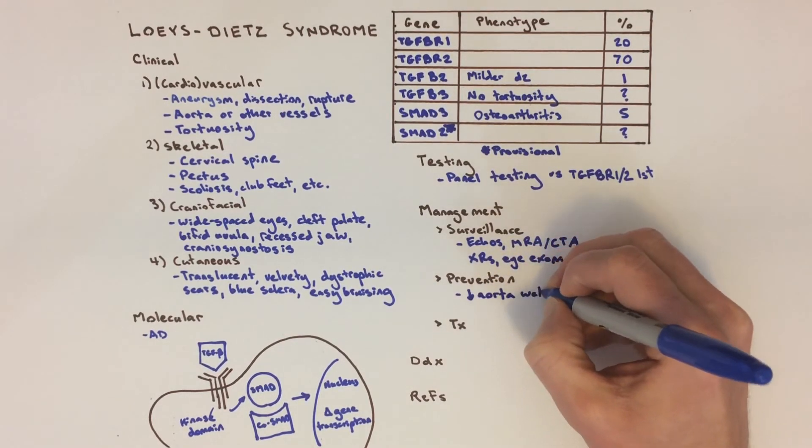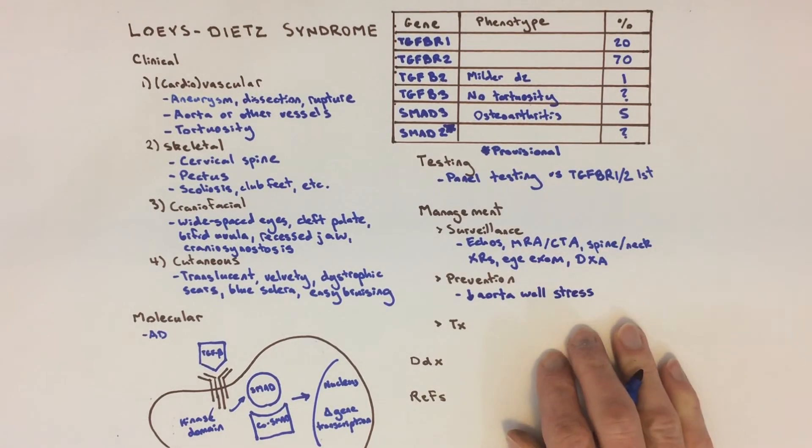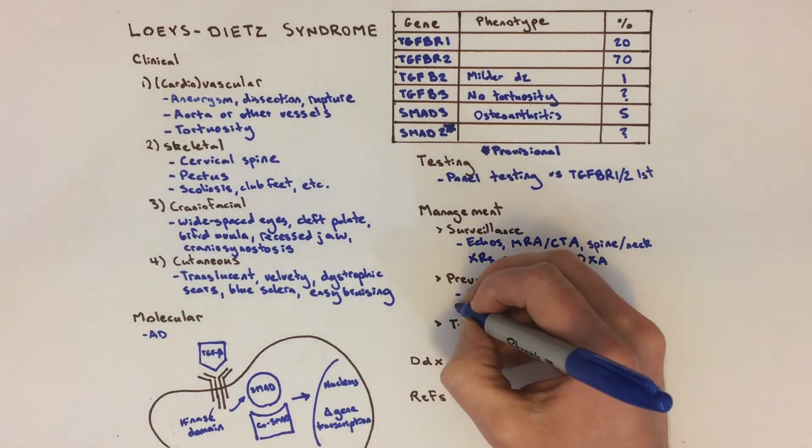Angiotensin-2 receptor blockers, including losartan, lower blood pressure and antagonize TGF-beta signaling, which is mentioned above, is increased in Loeys-Dietz syndrome.